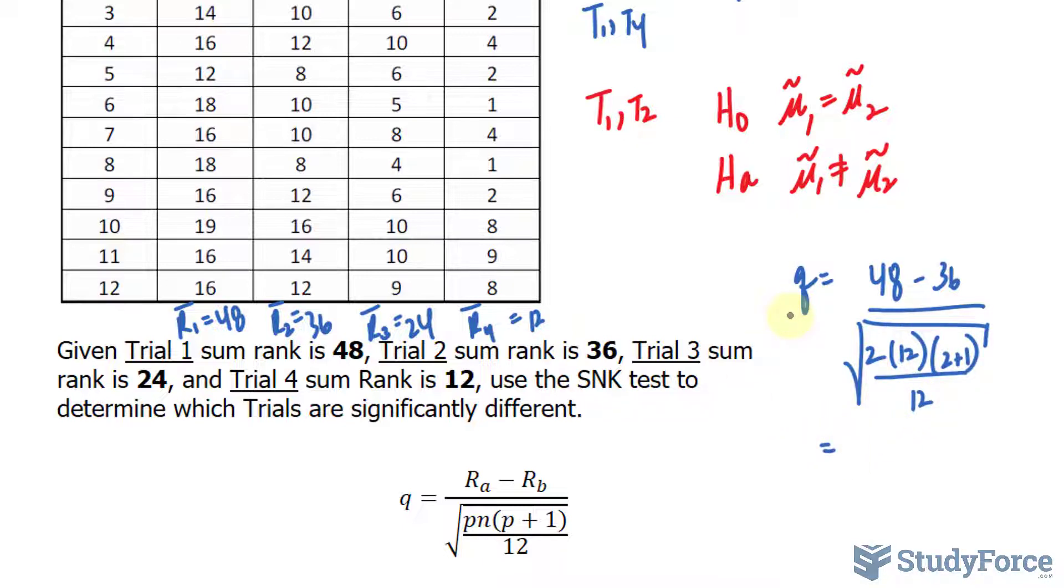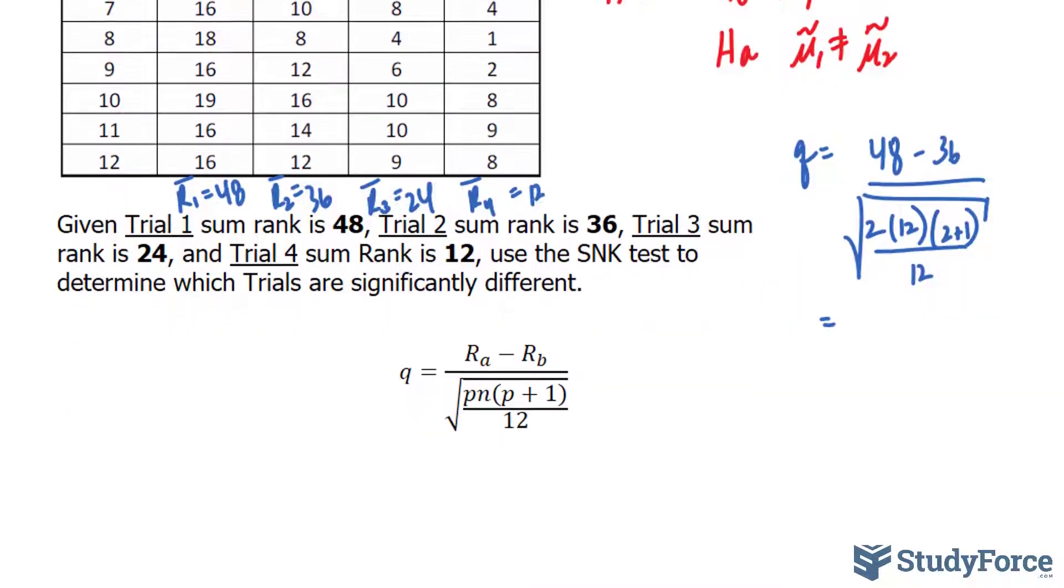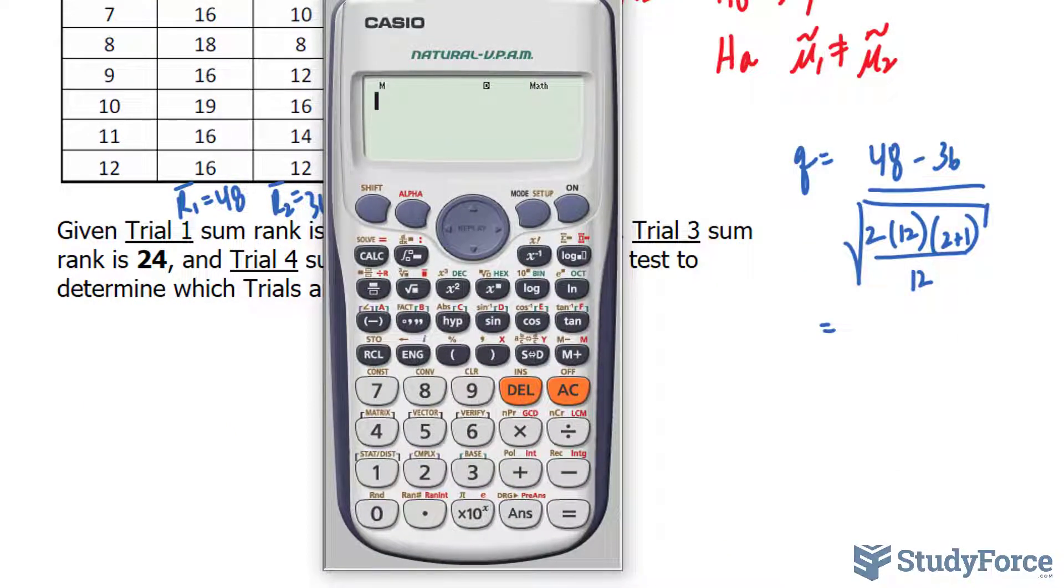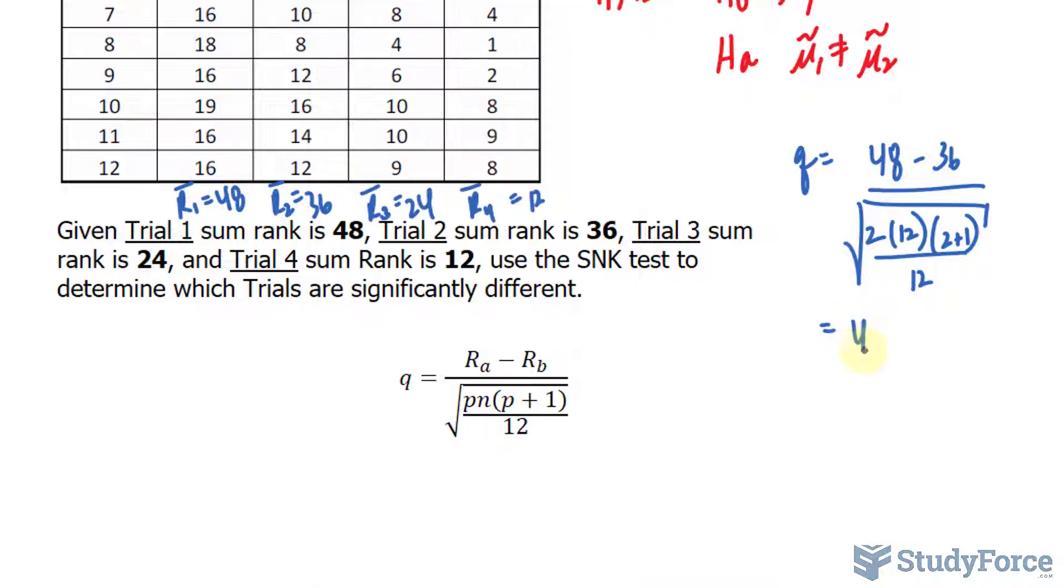2 plus 1 over 12. We'll calculate Q and compare it to the critical Q value, which I'll show you how to find in a table in a moment. So using our calculator, 48 minus 36 makes 12 divided by the square root. And within our square root we have 2 times 12 times 3, 2 times 12 times 3 divided by 12. That equals 4.898.